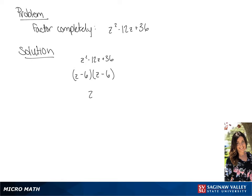So we have 6 in both binomials, giving us z minus 6 squared.